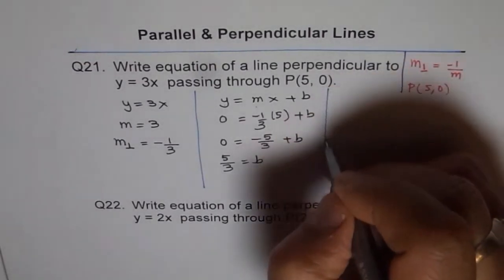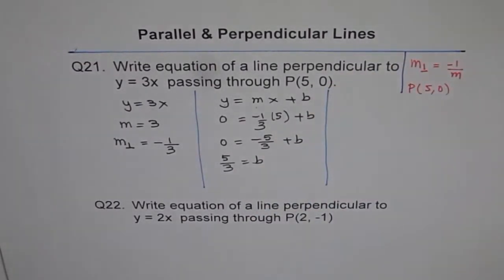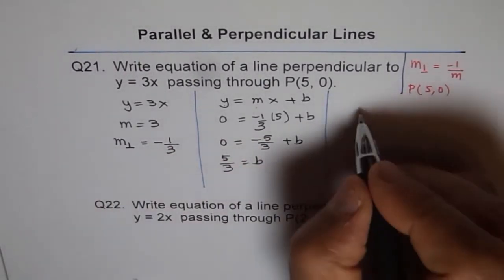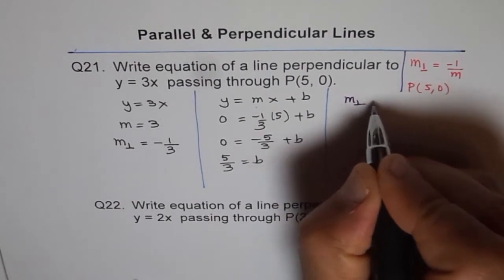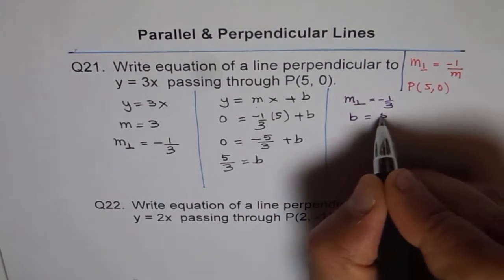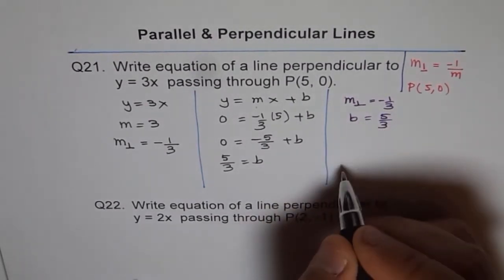Now you know b, you know m. Can you write down the equation? I think so. So what do you know? Let me write again. We know m of the perpendicular line is minus 1 over 3 and b is 5 over 3, right?